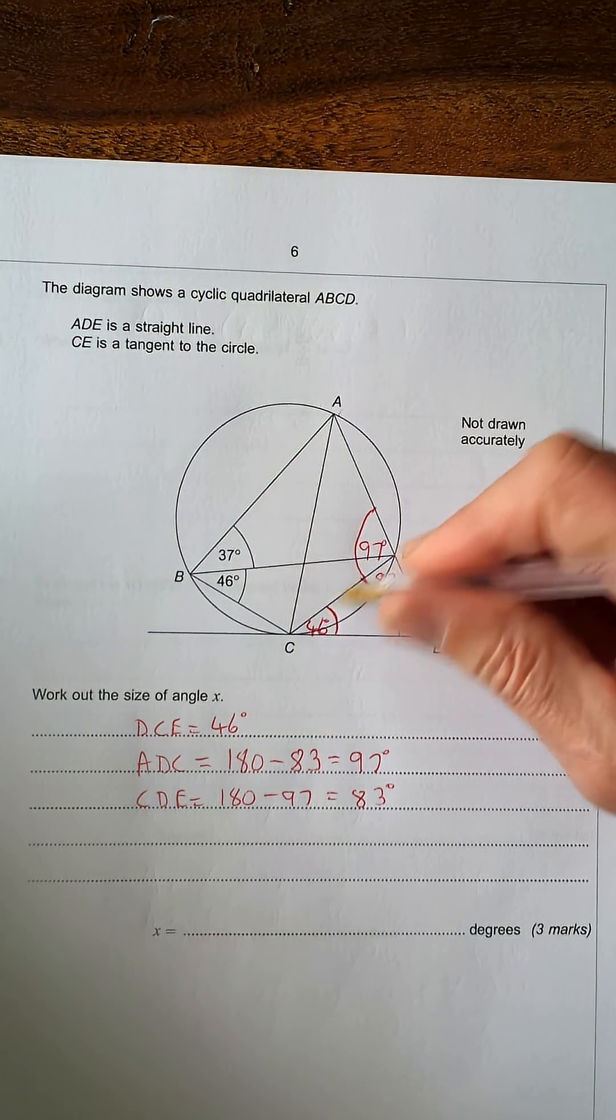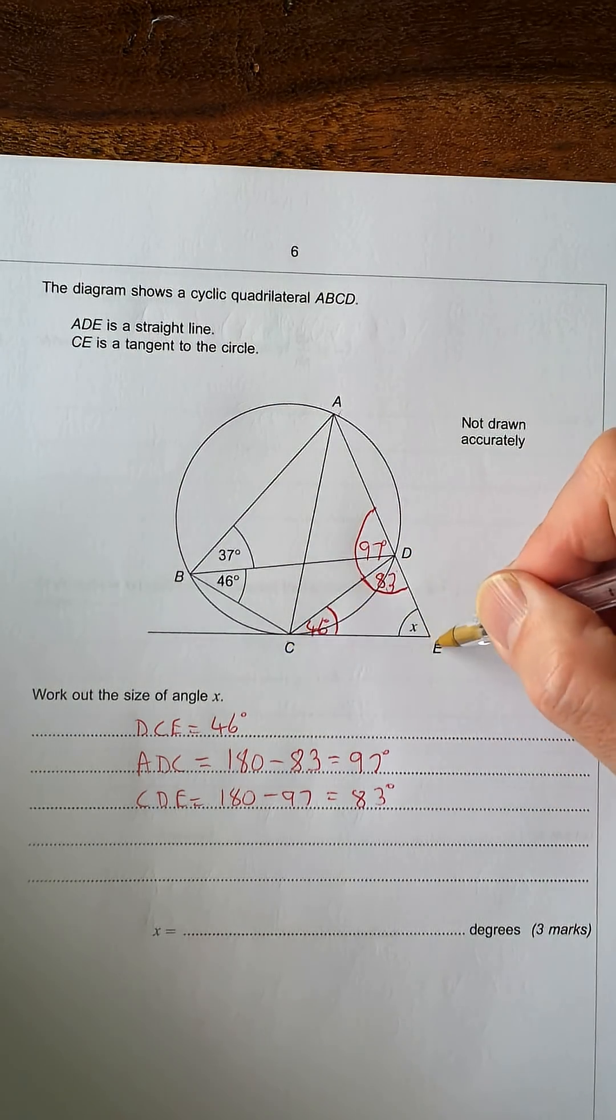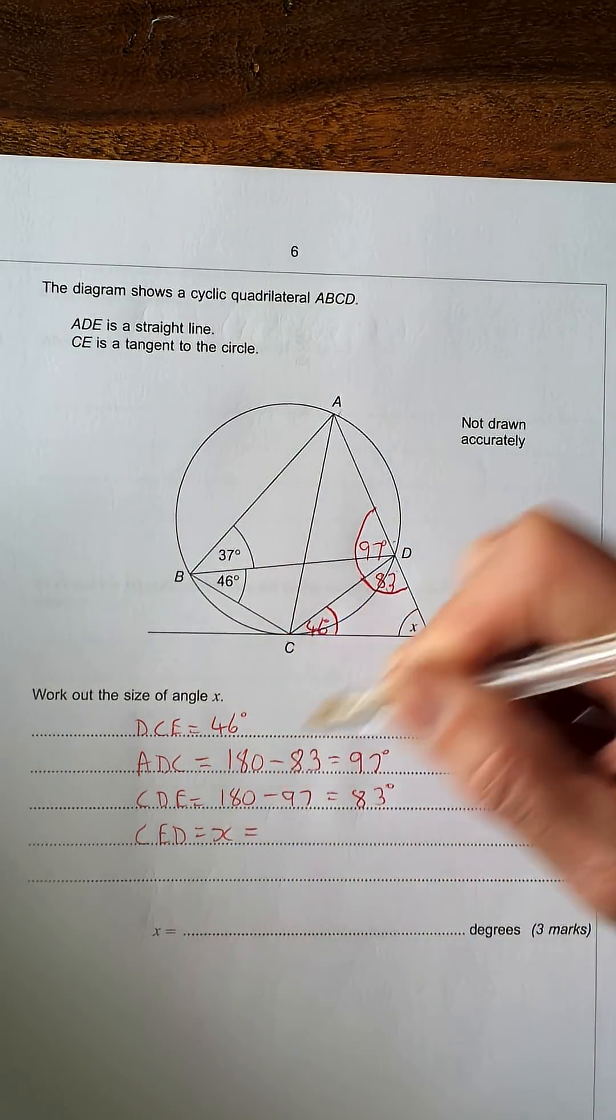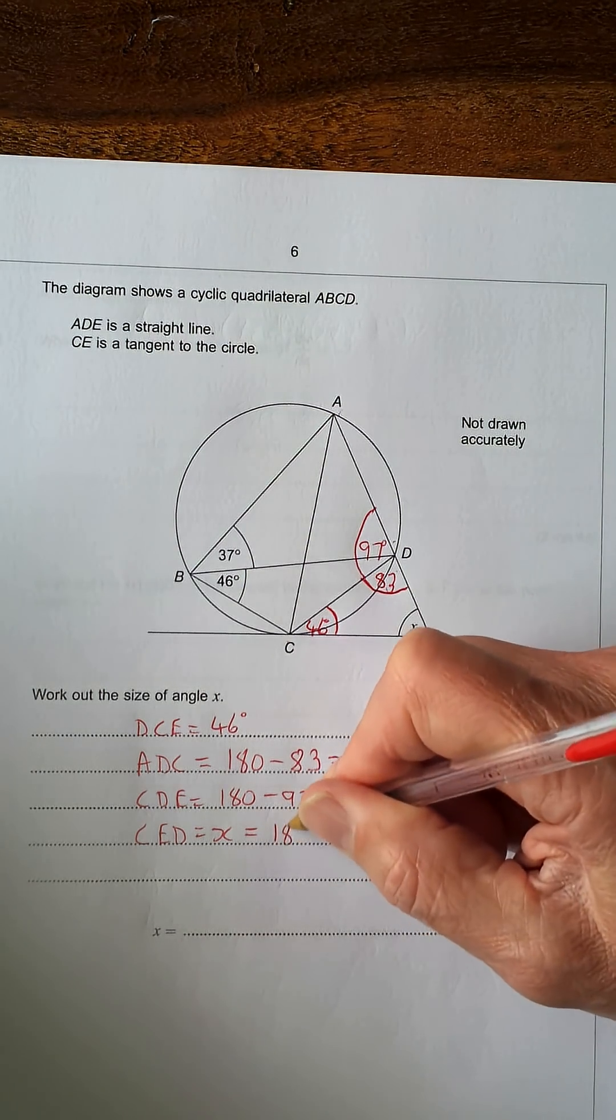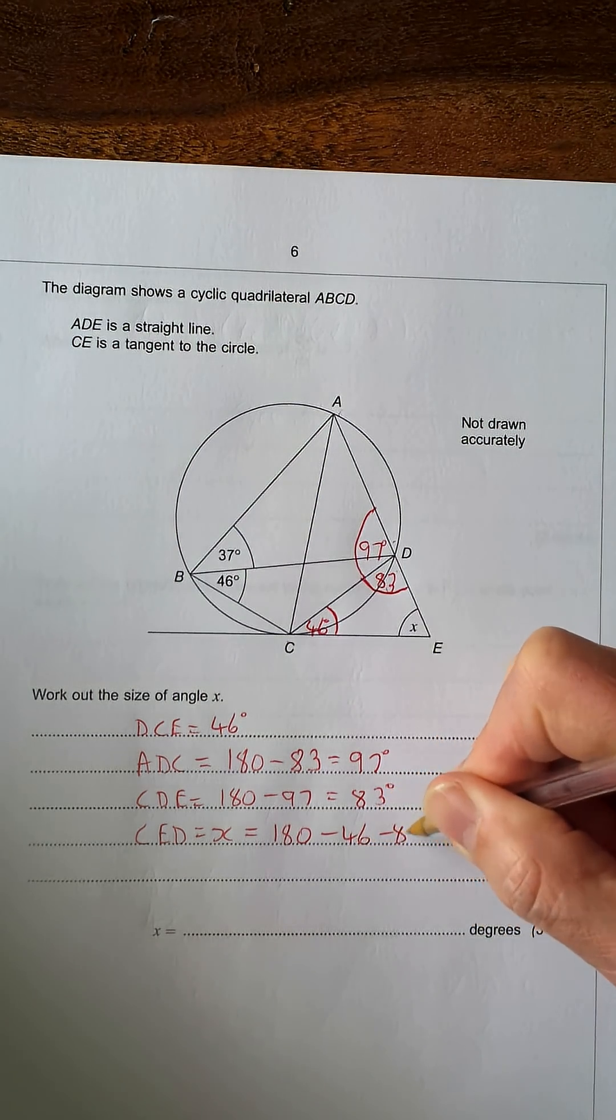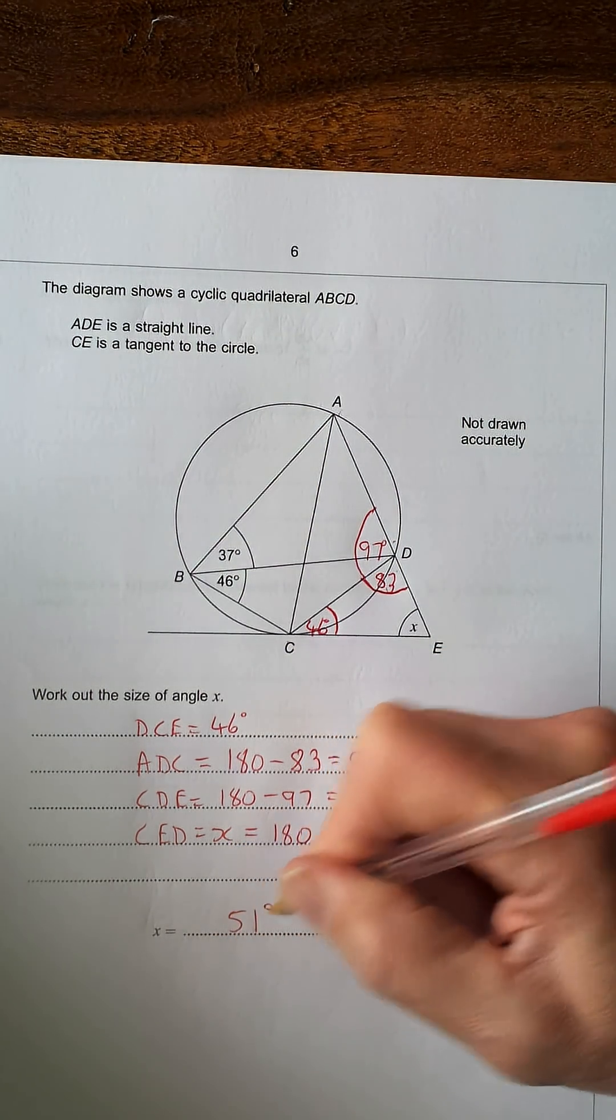Now we have two of the angles of the triangle, and angles in a triangle add up to 180 degrees. So we've got CAD. CAD, or in this case X, equals 180 minus 46 minus 83. And X equals 51 degrees.